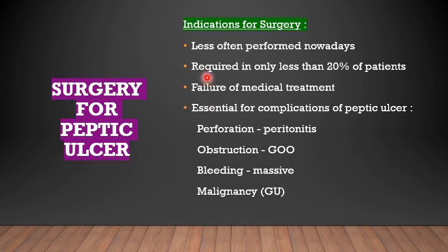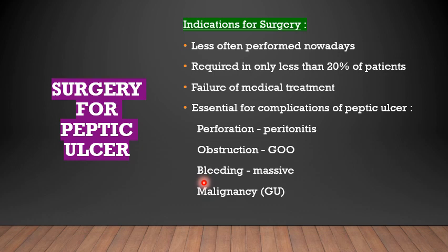The indications for surgery are becoming less and less — nowadays less than 20% of patients require surgery for peptic ulcers, usually due to failure of medical treatment. The present medical treatment regime is very effective, making surgery less necessary. Complications of peptic ulcer usually treated surgically include perforation, obstruction, gastric outlet obstruction, bleeding from the ulcer, and malignancy in gastric ulcers.